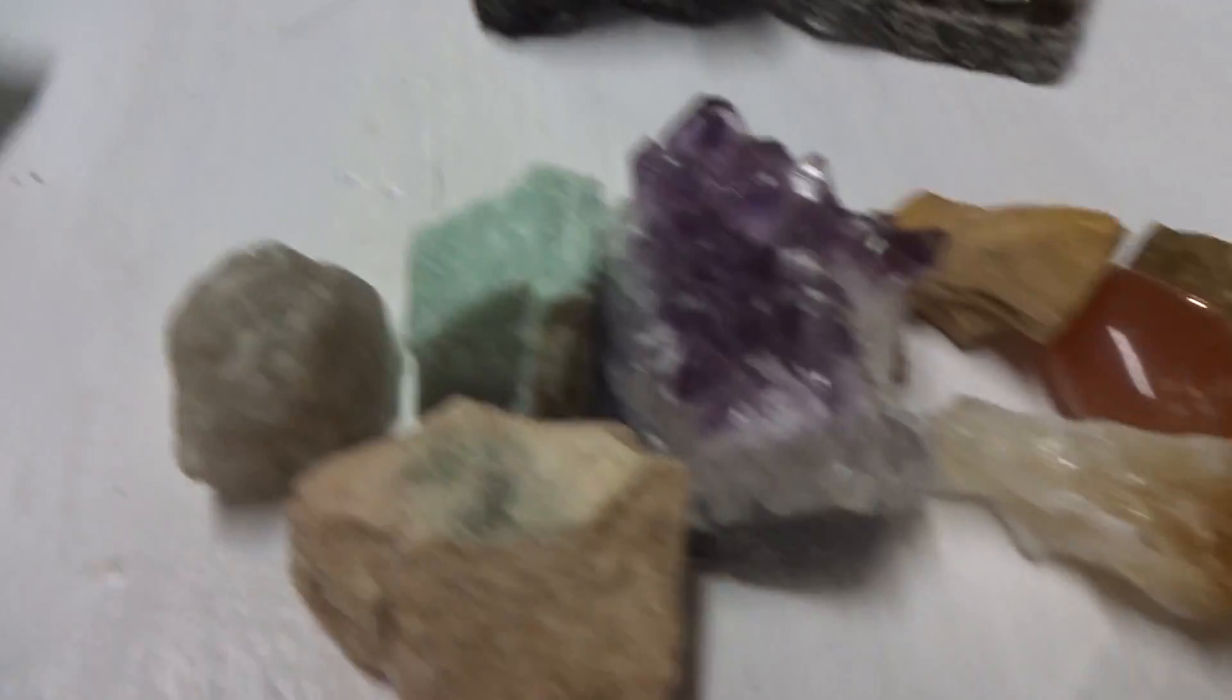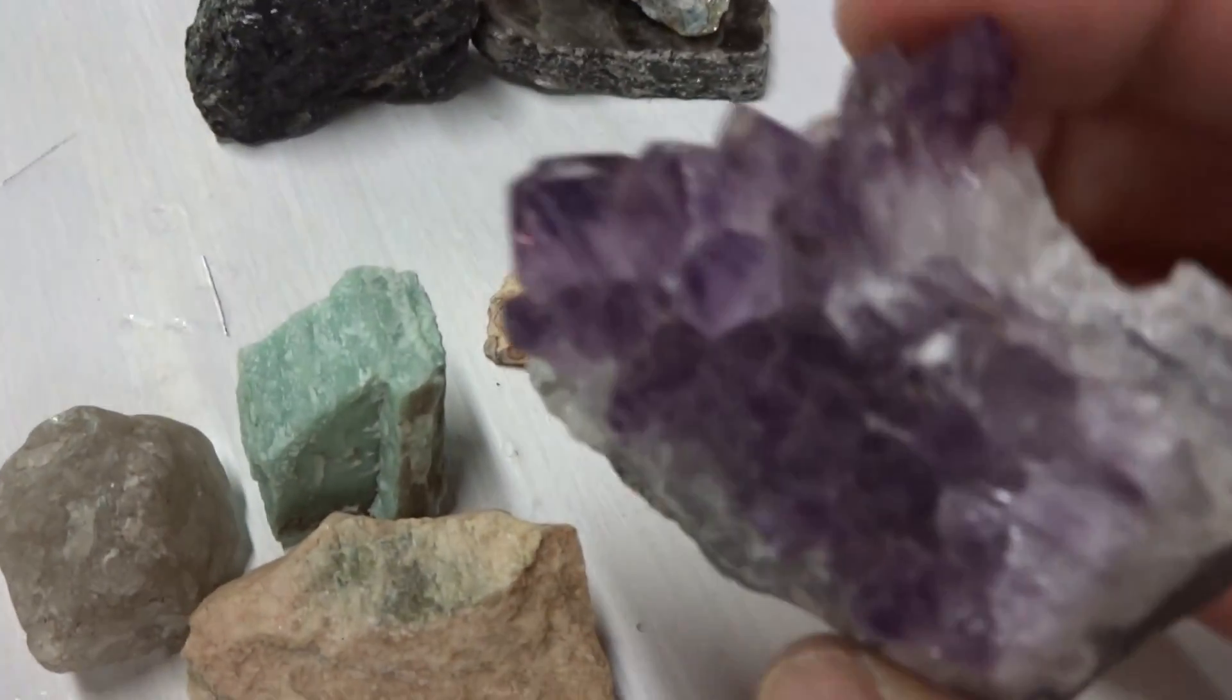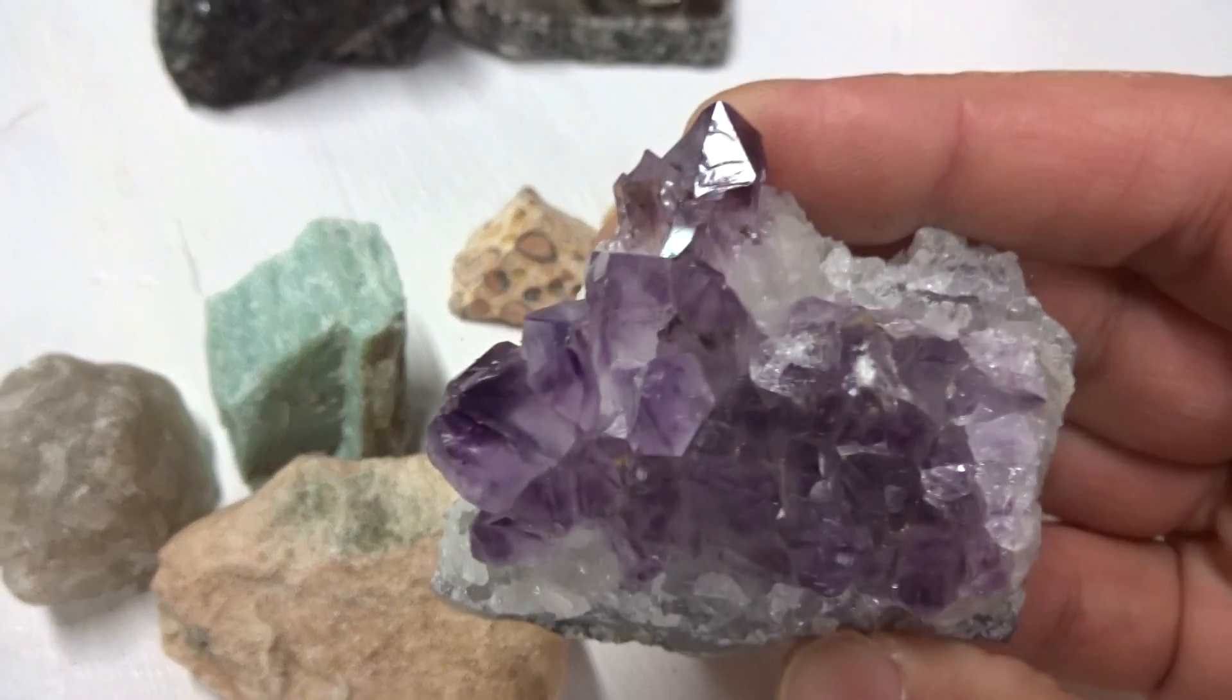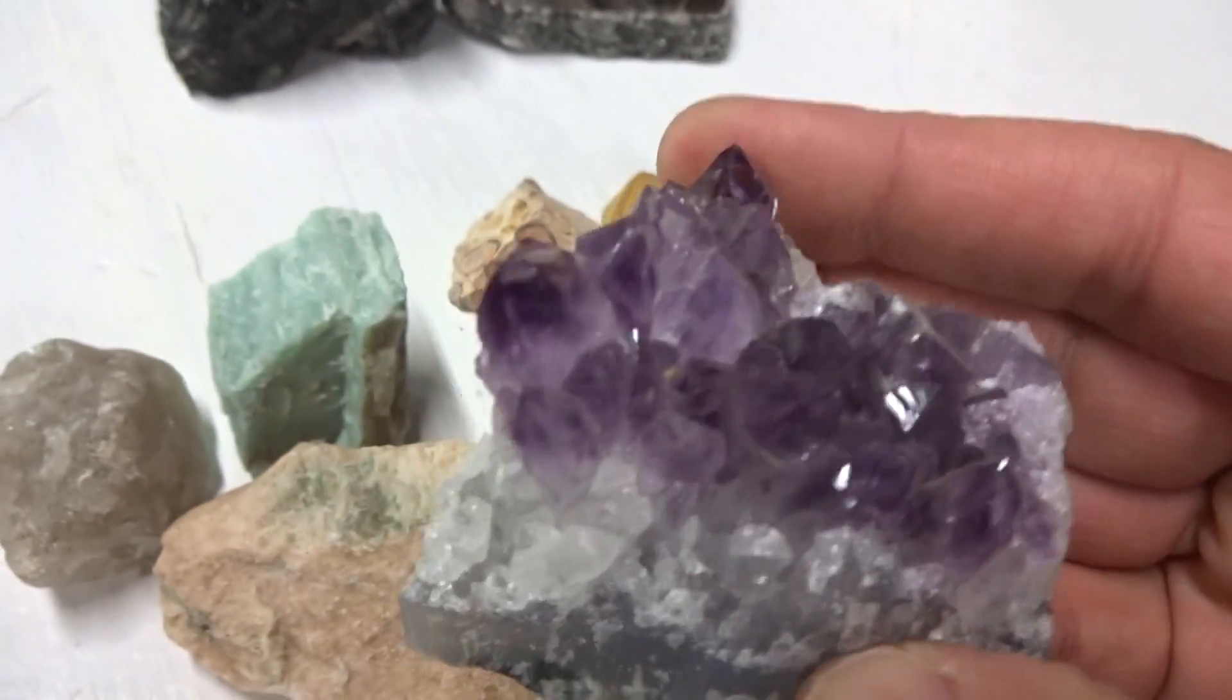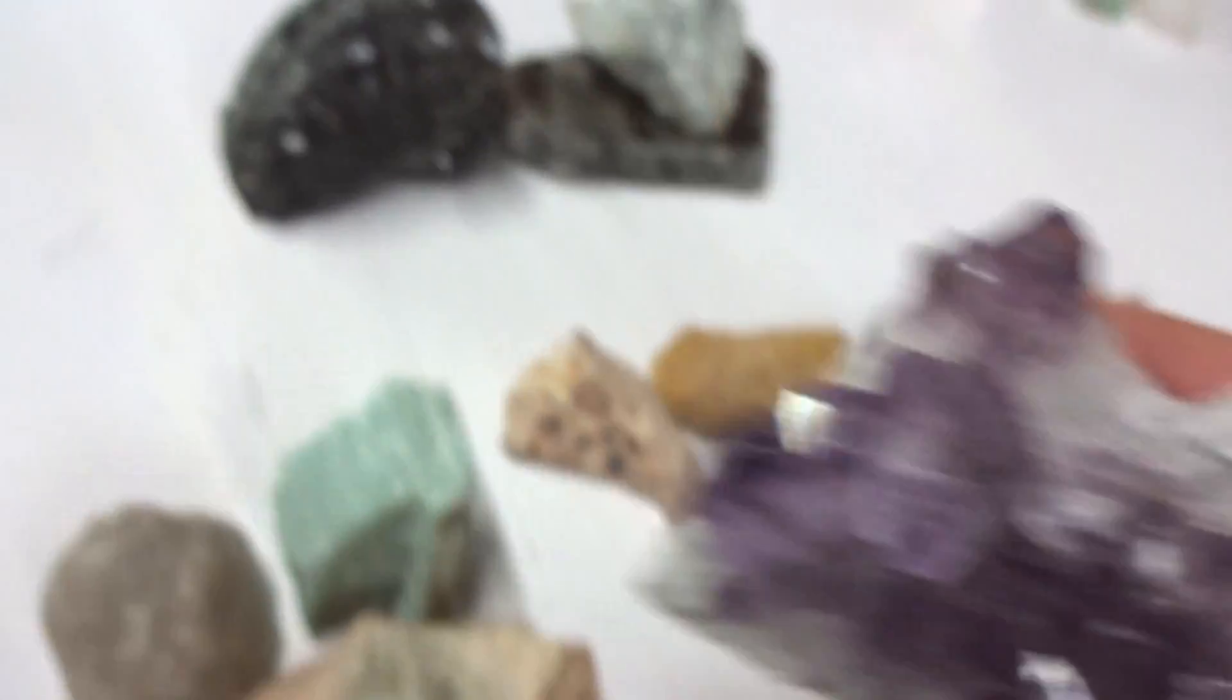And finally the silicates. With the silicates we find the quartz silicon dioxide. This is amethyst. Amethyst is violet because of iron.